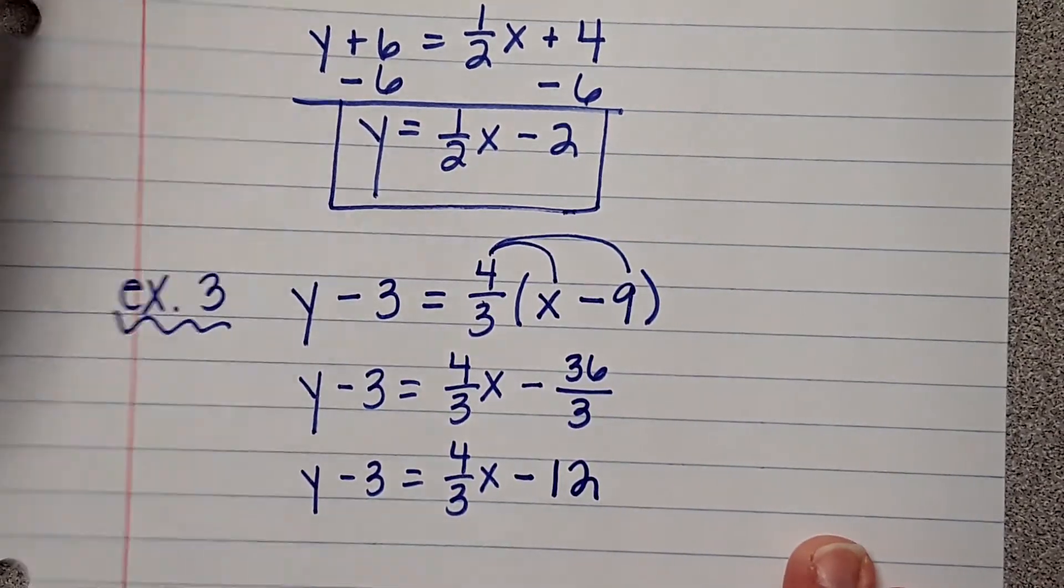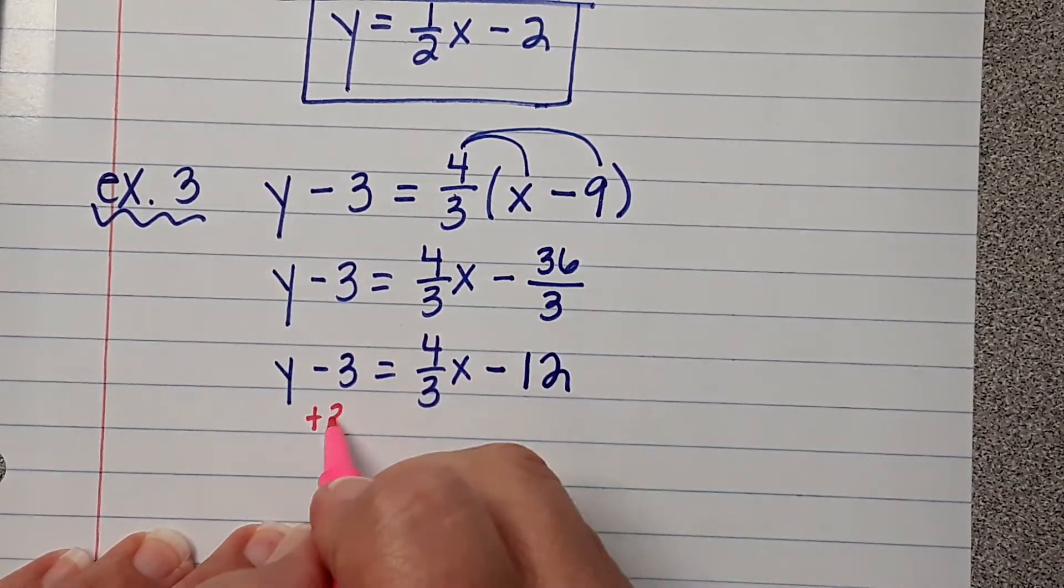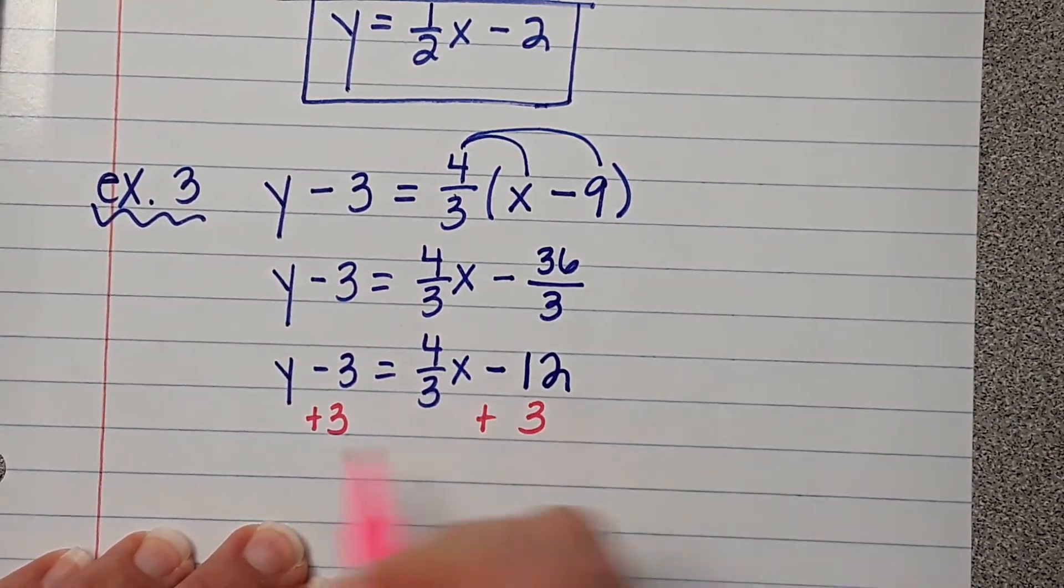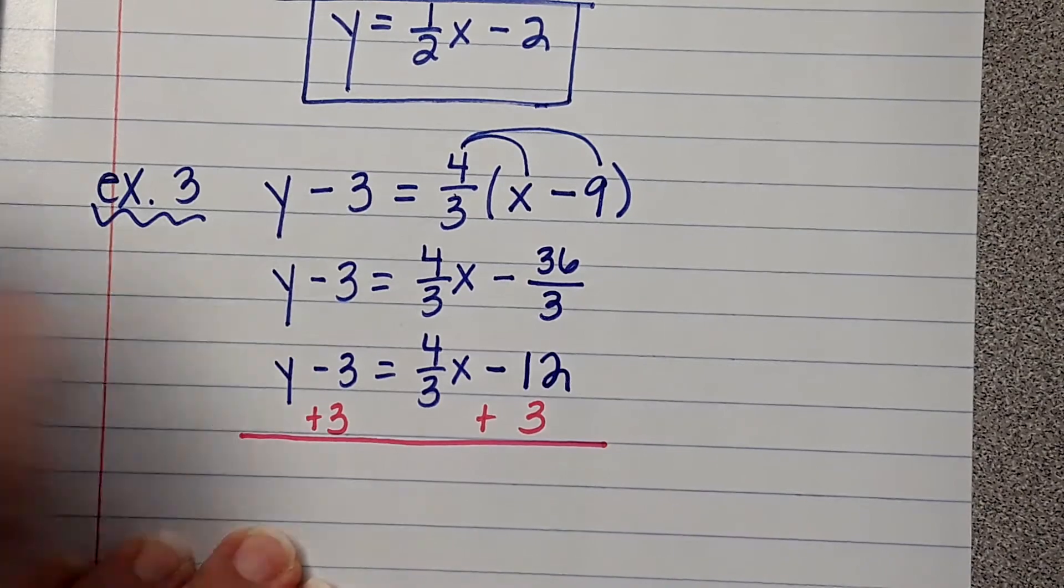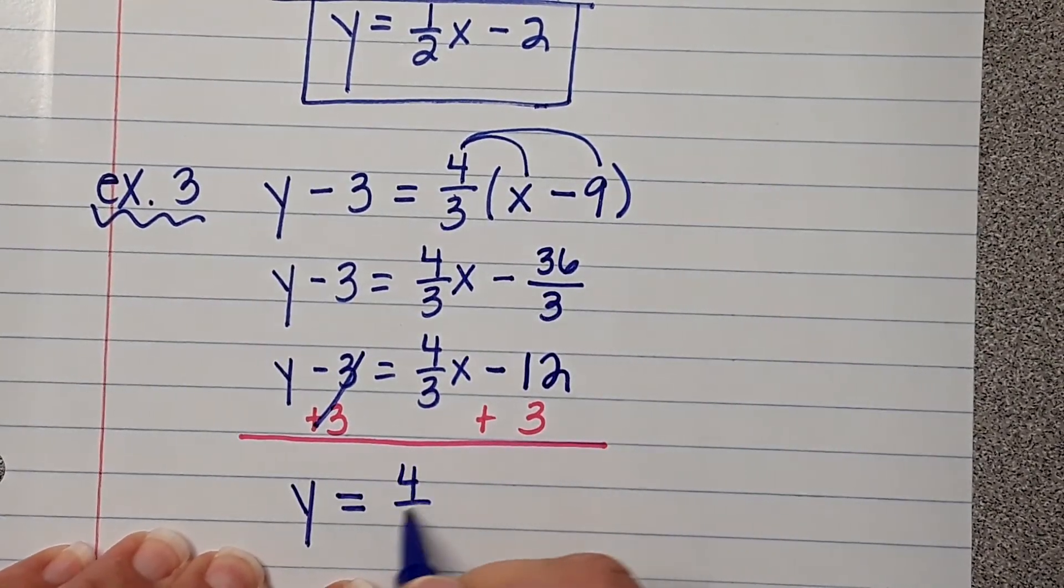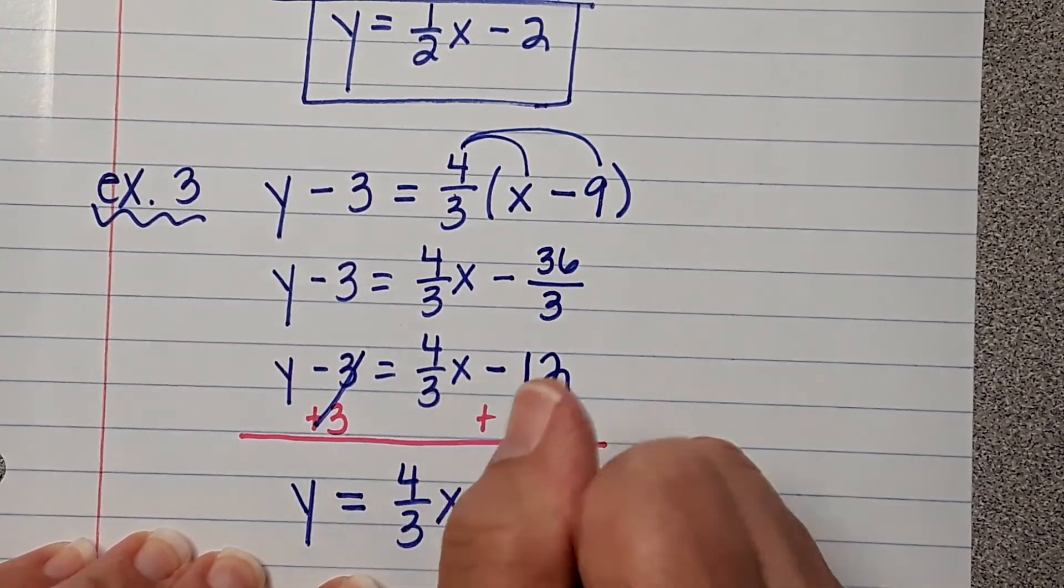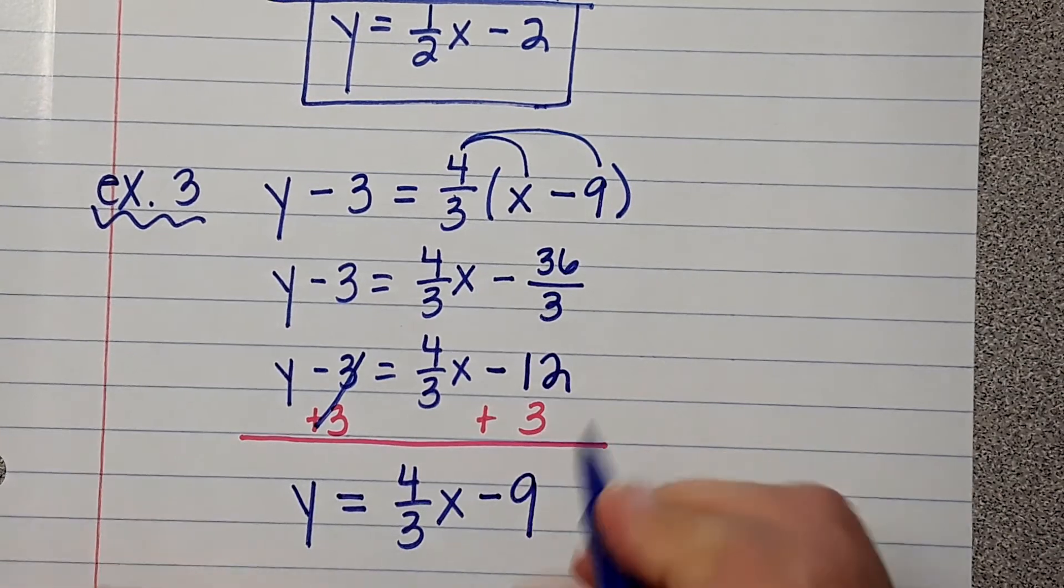And now, I have one more step to do. And what's that step? Add 3. Add 3 to both sides. Negative 12 plus 3 is? Negative 9. Negative 9.